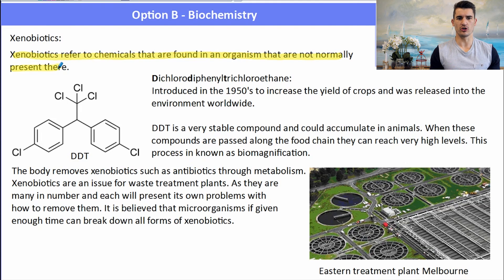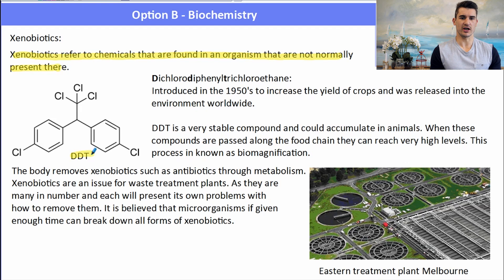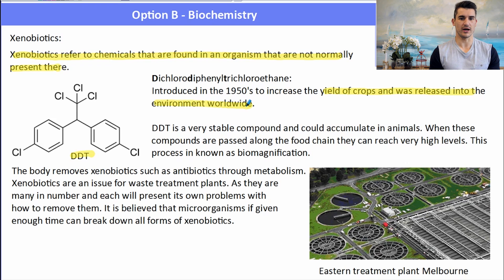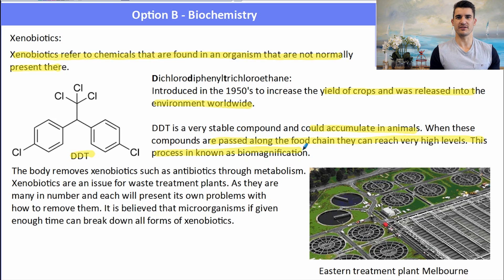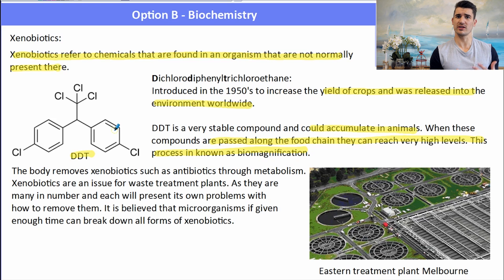Xenobiotics refer to chemicals that are found in organisms that would not normally be present there. For example, DDT — dichlorodiphenyltrichloroethane — was introduced in the 1950s to increase the yield of crops worldwide. DDT is a very stable compound and would accumulate in animals, and when passed along the food chain it could reach very high levels, especially in top-order predators. That was known as biomagnification.